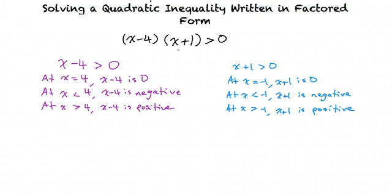And then we also have x plus 1 greater than 0. At x equals negative 1, x plus 1 is 0. At x less than negative 1, x plus 1 is negative.